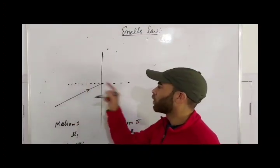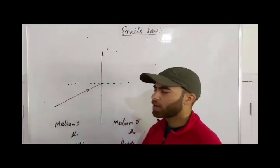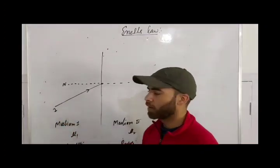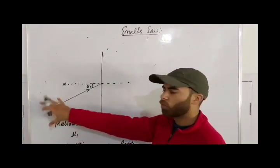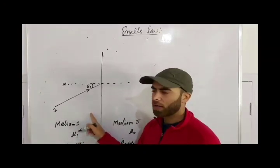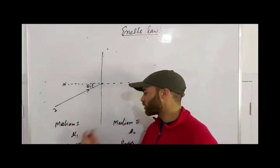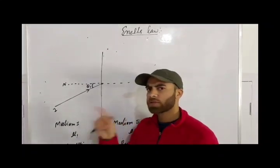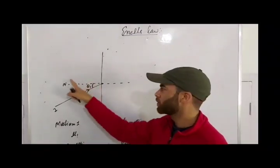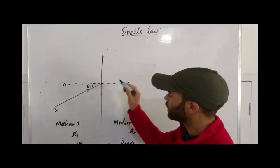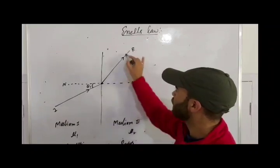This is the normal — let us call it N. This is the incident ray, and the angle between the incident ray and the normal is theta one. The refractive index of medium one is mu one, and the refractive index of medium two is mu two. Since this is the denser medium and that is the rarer medium, mu one is greater than mu two. Since light travels from a denser to a rarer medium, the light bends away from the normal, producing a refracted ray of light.